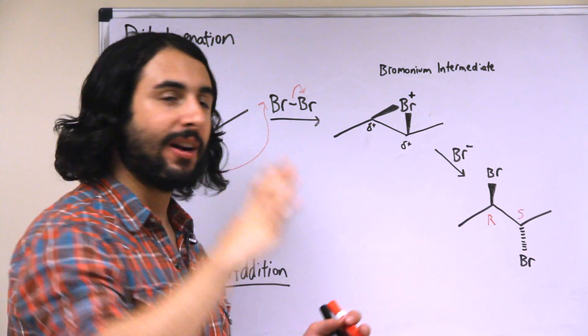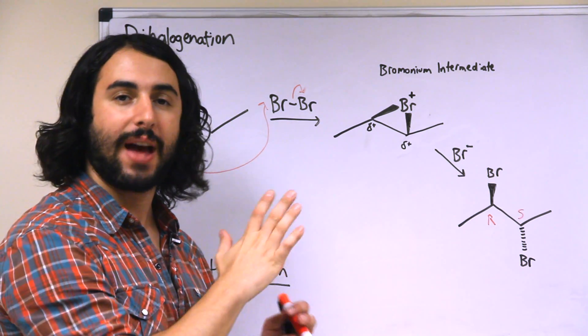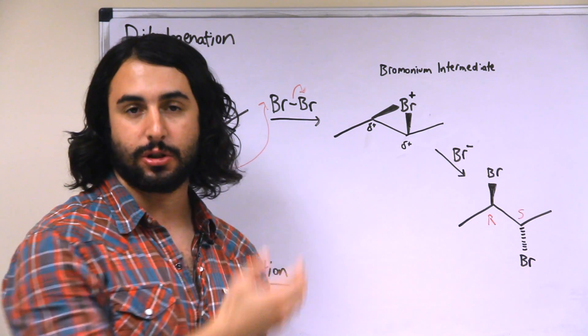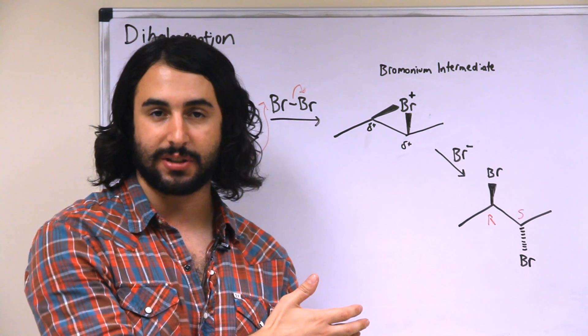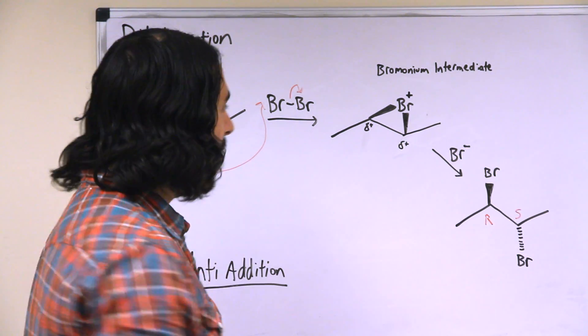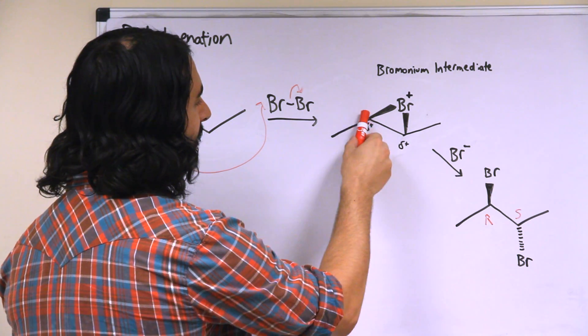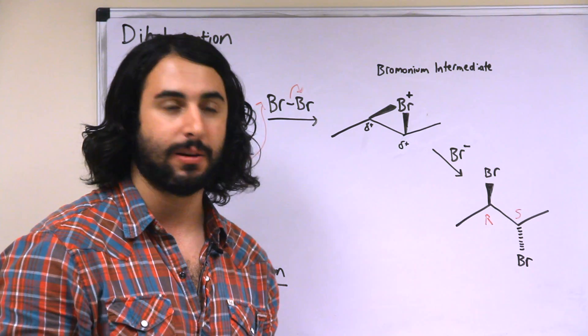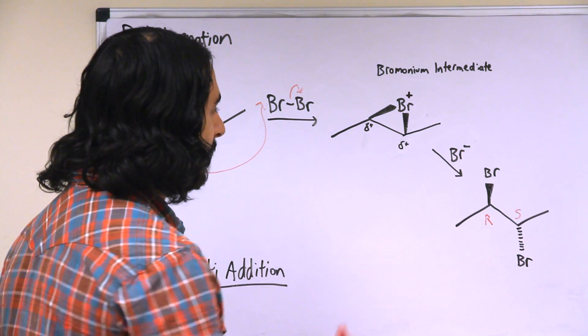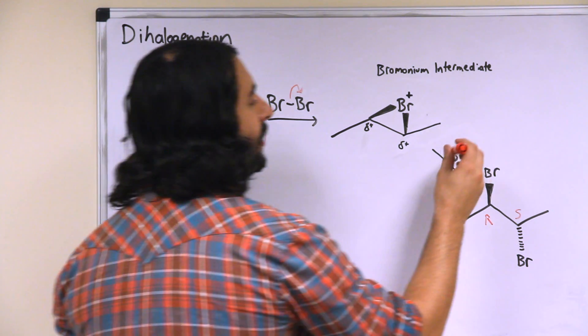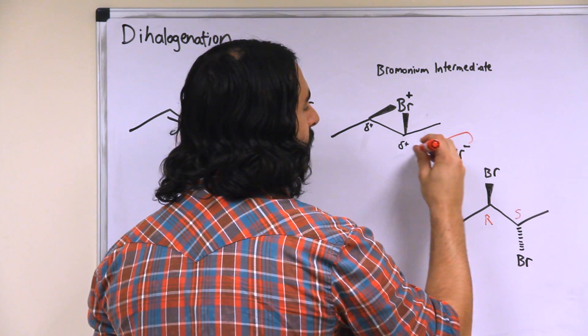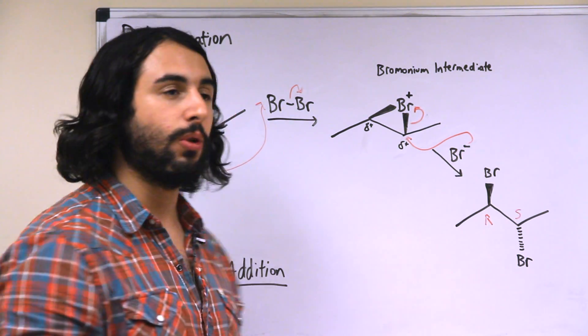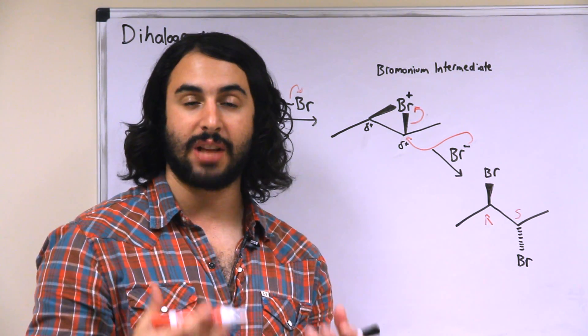What we end up getting is this bromonium ion intermediate which is a little bit strange. It's as though a bromine atom has inserted itself into that pi bond and so we have a formally positively charged bromine atom as it's showing six electrons in this Lewis dot structure as opposed to its typical valency of seven. Now each of these carbons is partially positive due to a polar bond to the bromine atom. So now the second step here, the bromide left over from before, is basically just going to do a standard SN2 reaction.